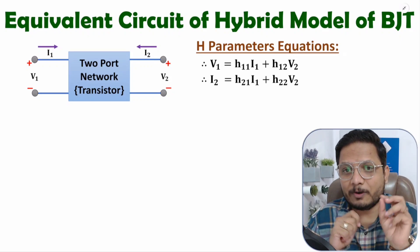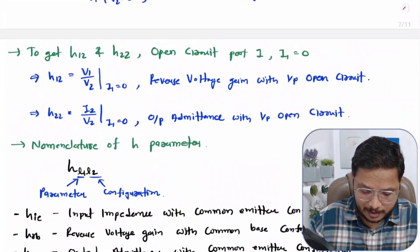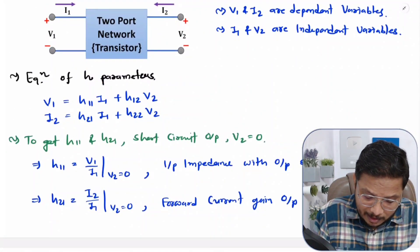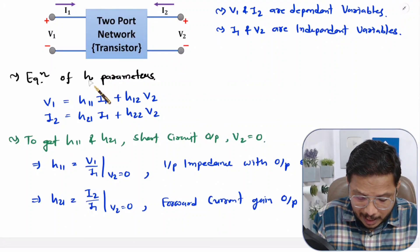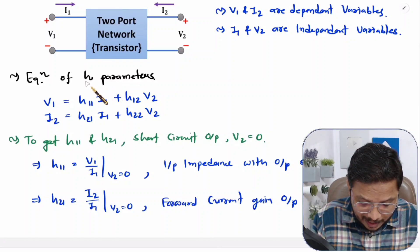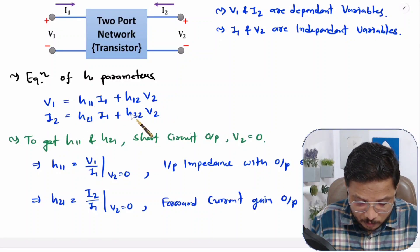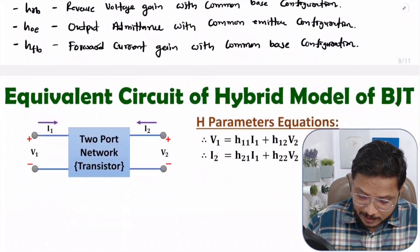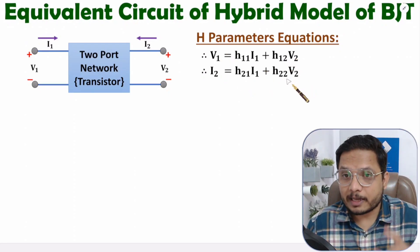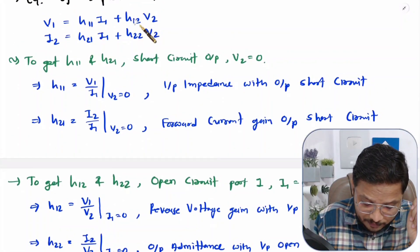In my last video, I explained the equations of the hybrid model, where I treated the transistor as a 2-port network and considered the hybrid model. With the hybrid model, we have the H parameter equations: V1 = H11·I1 + H12·V2 and I2 = H21·I1 + H22·V2. I also explained how to calculate these four different H parameters.